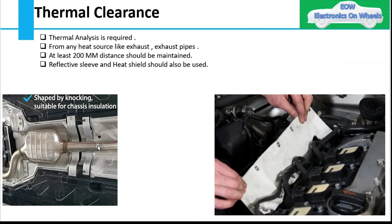The third type of clearance is thermal clearance. As the name suggests, this applies where temperatures are high and there is a heat source nearby. In this case, a thermal analysis is first required. From any heat source such as an exhaust pipe, you must maintain 200mm clearance between the heat source and your wiring harness.